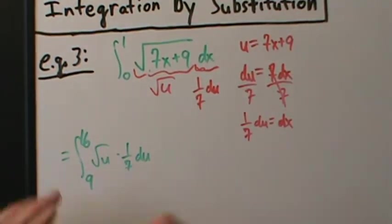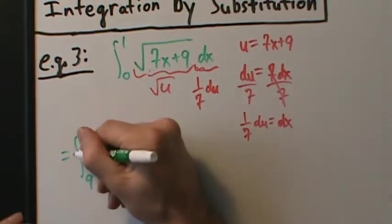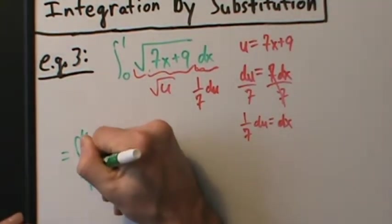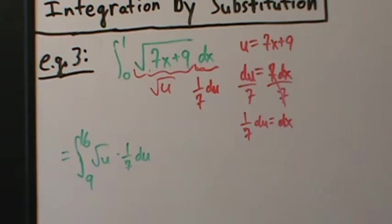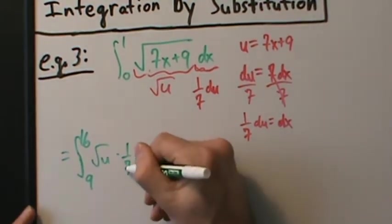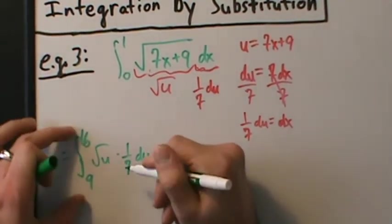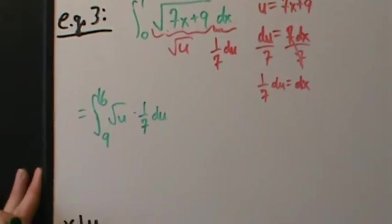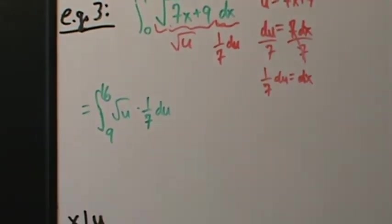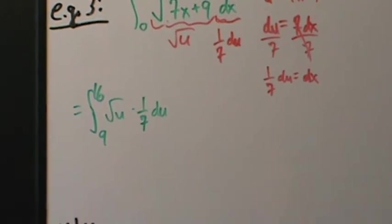Because it's a definite integral, we don't have to go back to the original variable — we have limits of integration in u, so we can just evaluate. Let's zoom in on this a little bit.